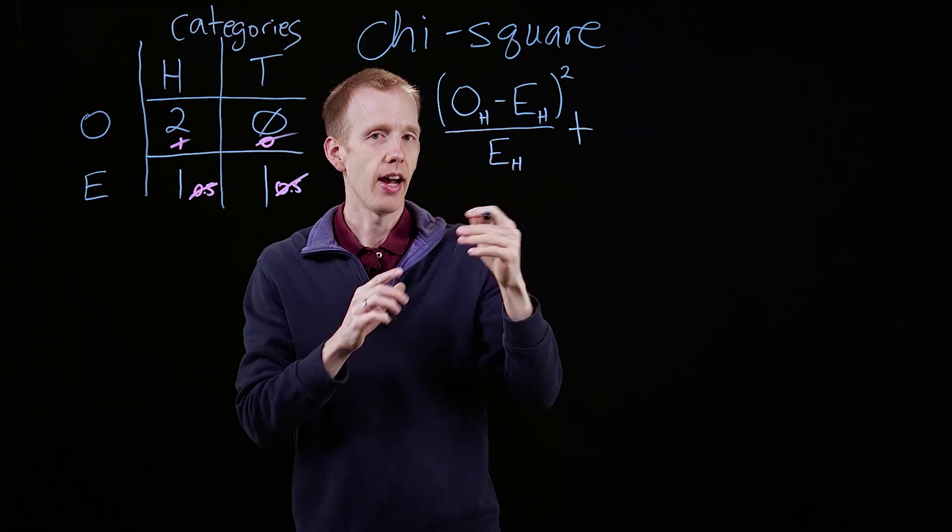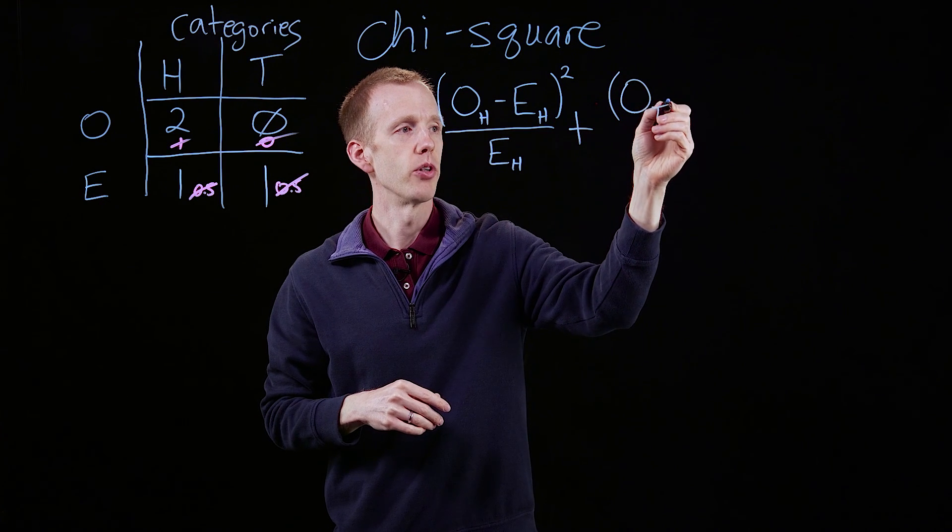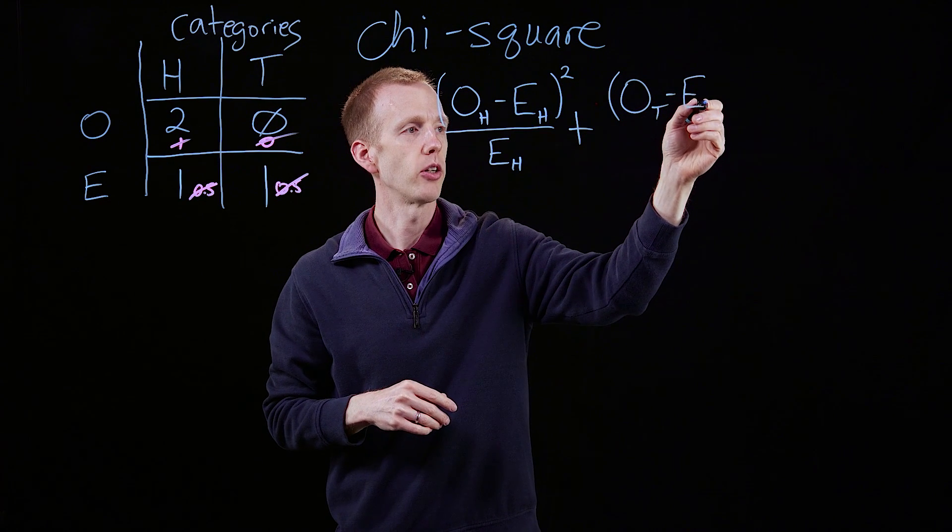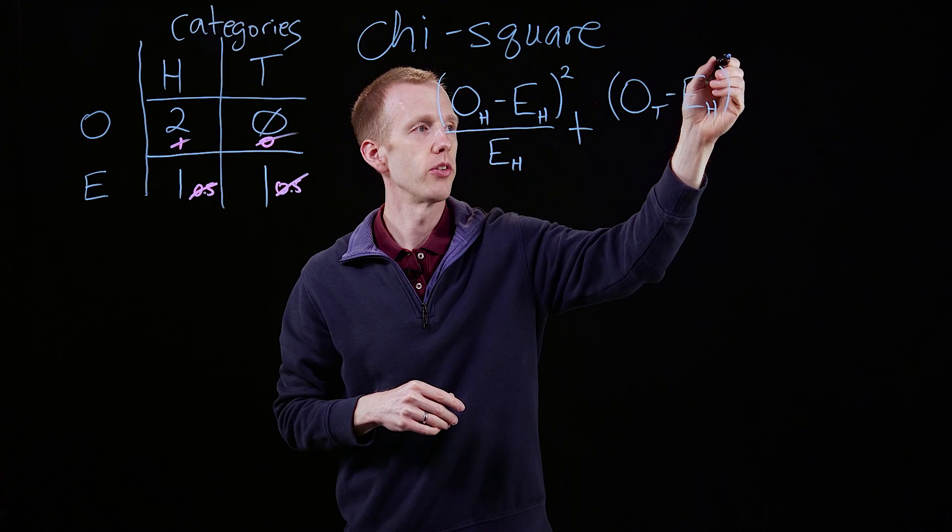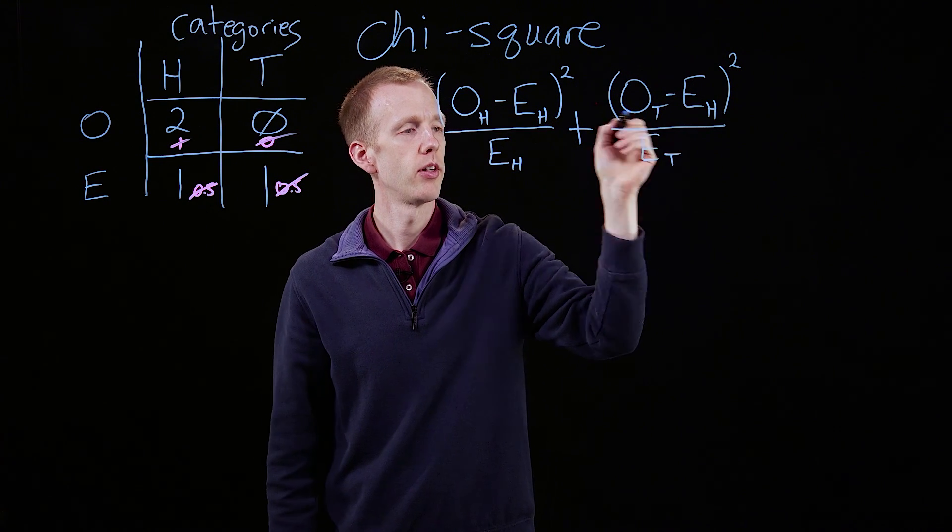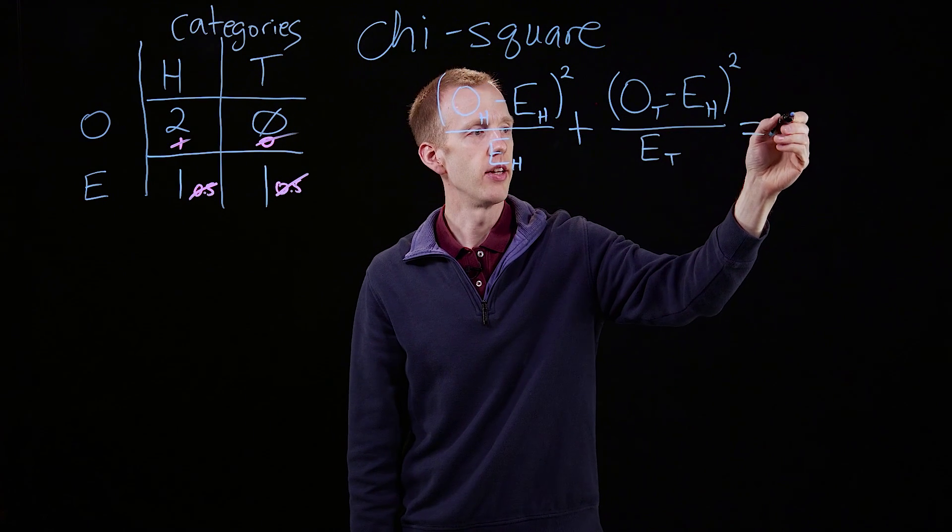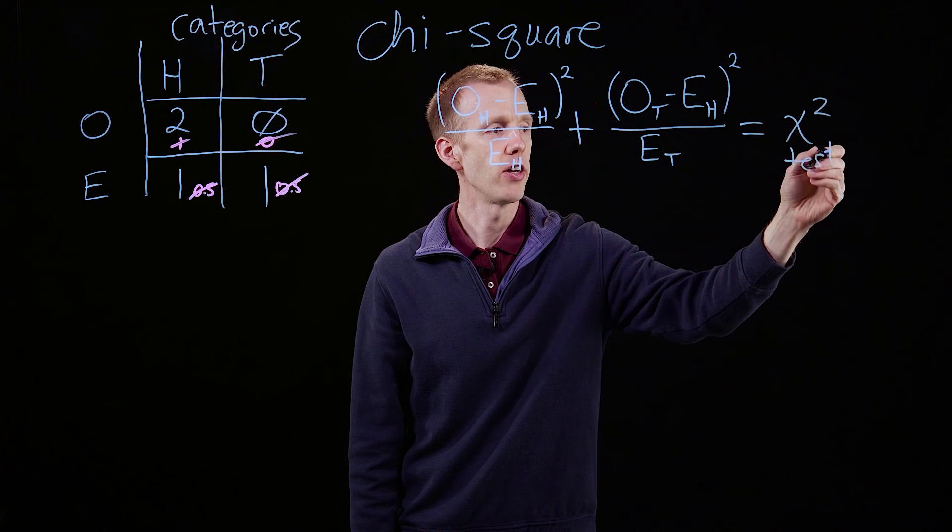We add the exact same formula for every subsequent category. So now we're talking tails. You observe numbers of tails, expected coin flips that would result in tails, square that, divide it by the expected number of tails flips. And the total of that is the chi-square test statistic value.